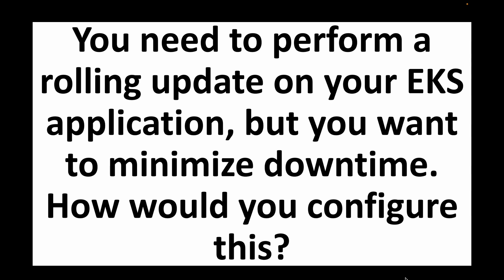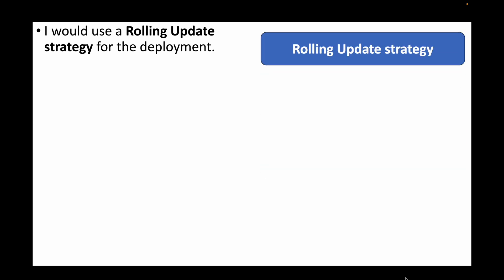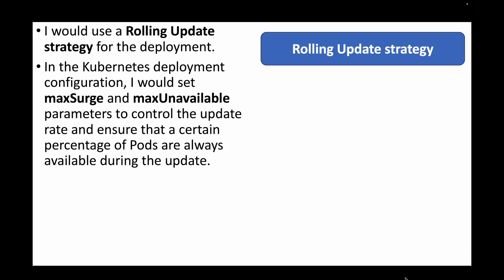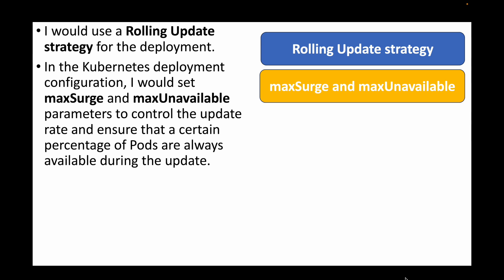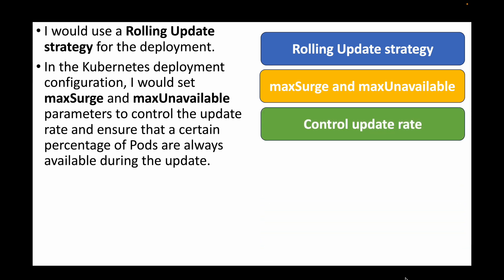The next question is: you need to perform a rolling update on your EKS application but want to minimize downtime. How would you configure this? We can make use of the rolling update strategy. Within the Kubernetes deployment configuration, we can set up the maxSurge and maxUnavailable parameters to control the update rate.